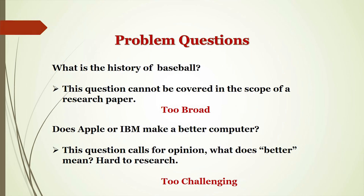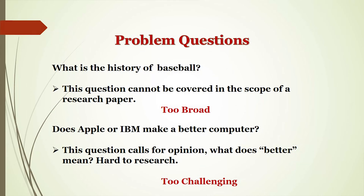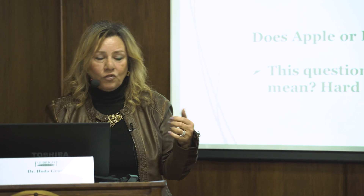Another problem is when a question cannot be covered within the scope of a research paper because it is too broad, not measurable, and not focused. Also, using vague words like 'better' — for example, 'Is IBM or Apple a better computer?' — makes it hard to research and too challenging. We don't want to choose questions that are too challenging or too vague.